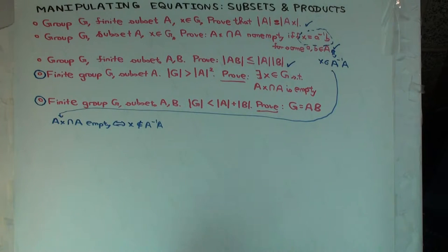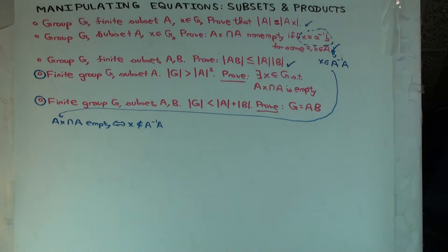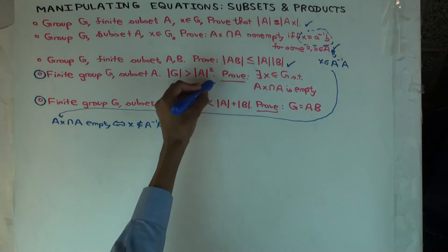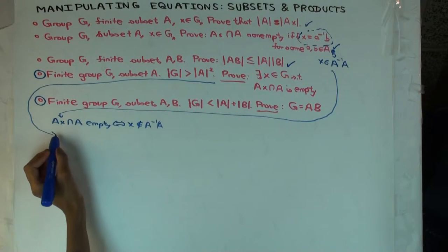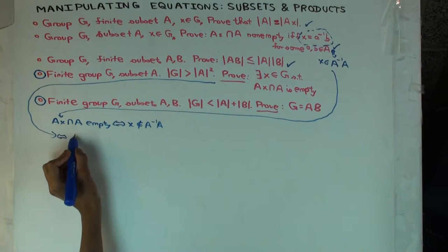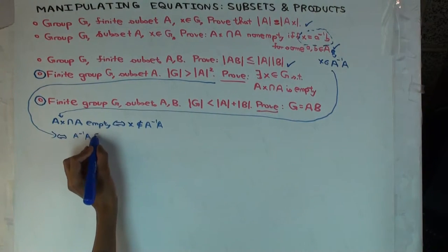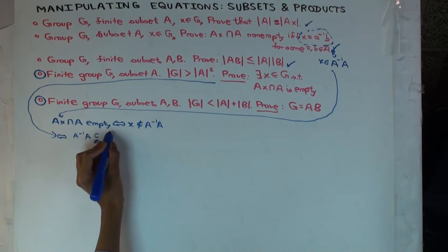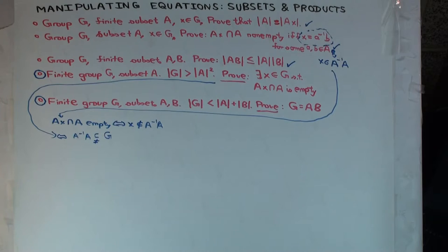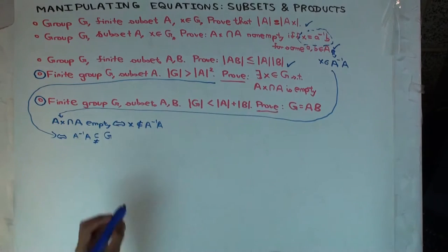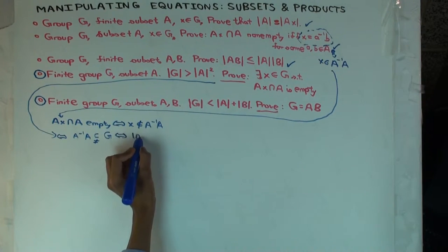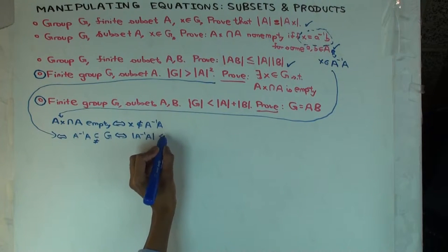What is that equivalent to showing? The size of A inverse A is smaller than the size of G. So this is equivalent to showing that A inverse A is a proper subset of G — it's a subset of G already, but we want to show it's not all of G. Since we are talking of finite sets, this is equivalent to showing that the size of A inverse A is strictly less than the size of G.